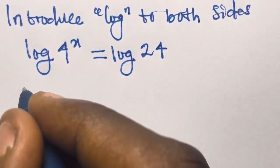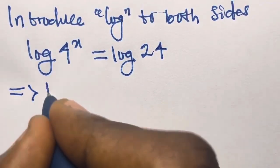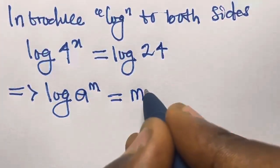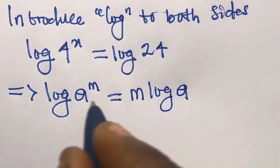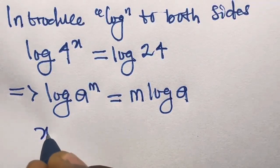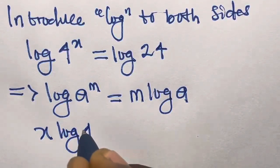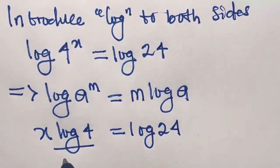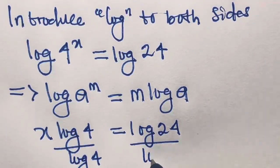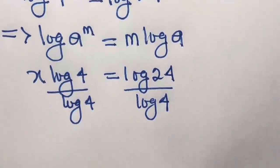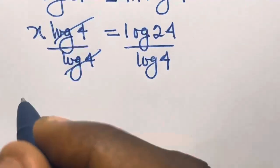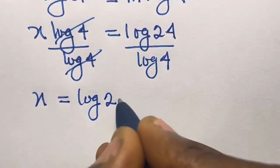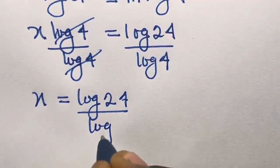Let's recall that log(L^M) equals M·log(L). Applying this, we have x·log4 equals log24. Then if we divide both sides by log4, this will cancel out, and we have x equals log24 divided by log4.